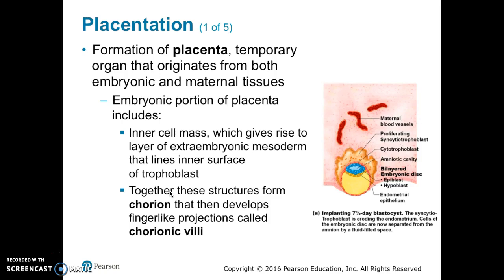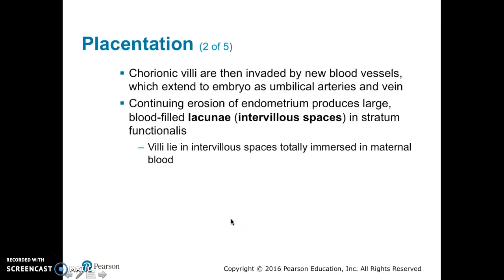Together these structures form the chorion, which then develops finger-like projections called chorionic villi. This picture shows the implantation of the seven-and-a-half-day-old blastocyst — the syncytial trophoblast is eroding the endometrium. The cells of the embryonic disc are now separated from the amnion by a fluid-filled space. The chorionic villi are then invaded by new blood vessels; these extend to the embryo as umbilical arteries and veins.